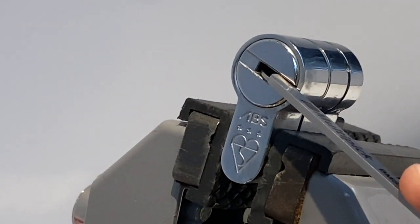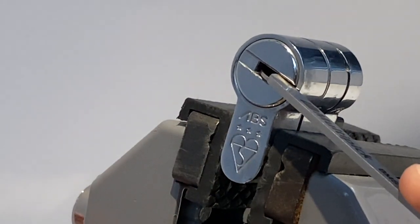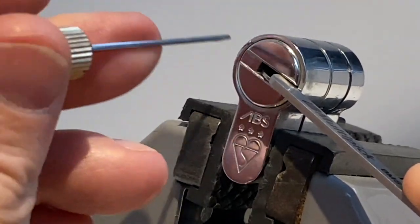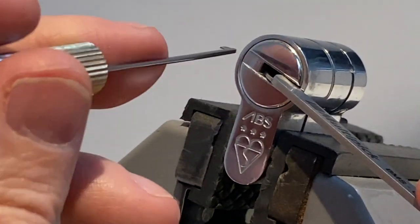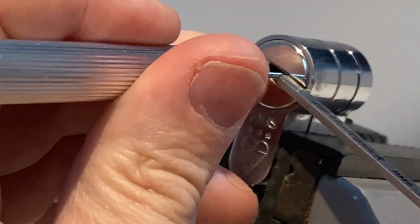Okay there we go, I've nudged everything down and you can now see that click by the way with the ball bearing kicking over. So let's lighten the tension a bit further and see if we can pick those key pins.